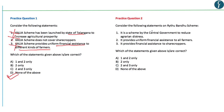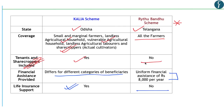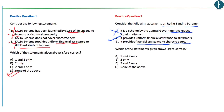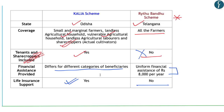Moving on to question 2: Consider the following statements on Raithubandhu scheme. First, it is a scheme by the central government to reduce agrarian distress — this is incorrect, as it is a scheme by the state government of Telangana. Second, it provides uniform financial assistance to all farmers — yes, this is correct. Third, it provides financial assistance to sharecroppers — under Raithubandhu scheme it does not provide financial assistance to sharecroppers, so this is incorrect. Hence B — statement 2 only — is the correct answer. These kinds of questions can be framed in your upcoming prelims examination. You should go through both schemes very carefully.